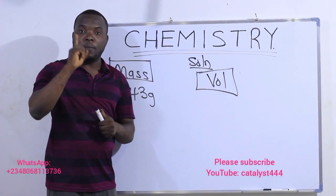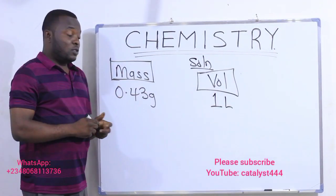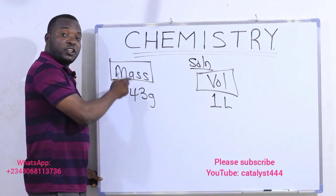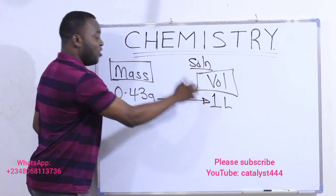Remember, the question says per liter, which means one liter. Now, this simply means that according to the question, 0.43 grams of iron is contained in one liter of the solution.